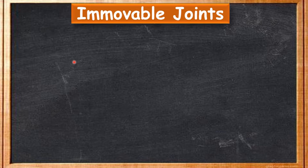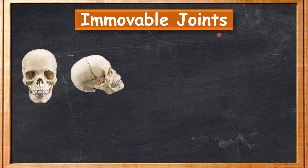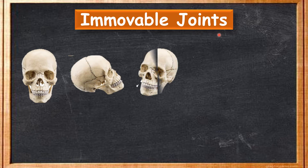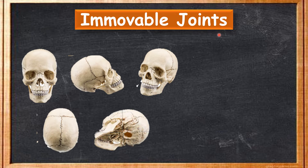Let's start with immovable joints — the joints that cannot be moved. Such joints in our body can be seen in the skull. The skull is the only part of our body where we can see immovable joints. These joints are interlocked. You can see lines on the screen showing that the bones in the skull are interlocked.